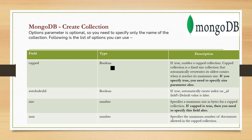The first option you can specify is 'capped', either true or false — the default is false. If you specify capped as true, it enables a capped collection. A capped collection is a fixed-size collection that automatically overrides its oldest entries when it reaches its maximum size. You specify the maximum number of documents, and once exceeded, older values get overridden. Another option is autoIndexId — if set to true, it automatically creates an index on the _id field.